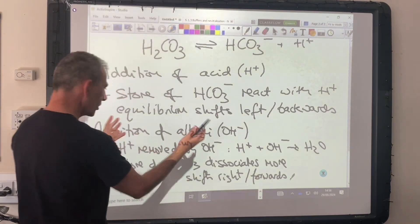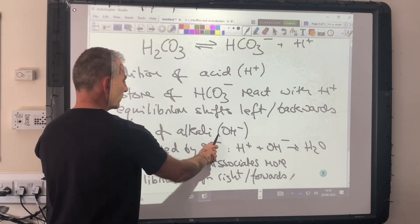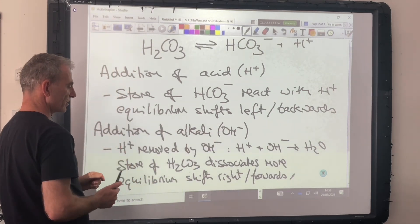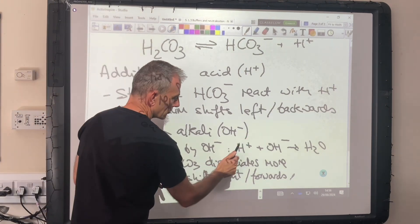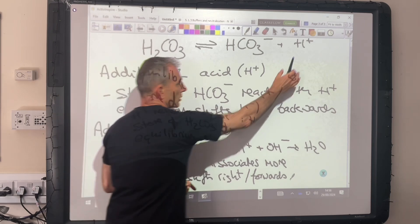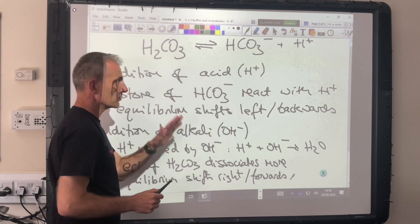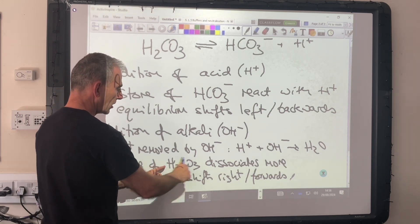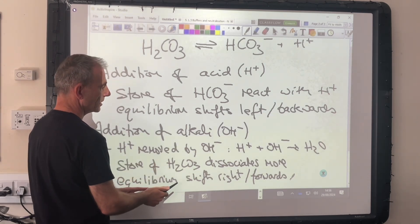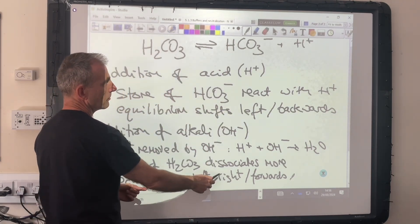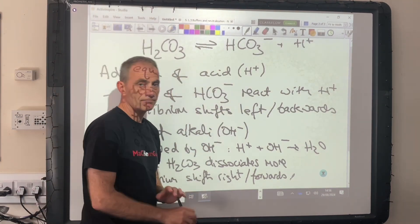In terms of an answer, all you would say is addition of alkali or OH minus ions will remove the H plus ions. The concentration of H plus ions is going down. The buffer responds with the store of carbonic acid, H2CO3, dissociating more. The equilibrium shifts to the right or moves forwards.